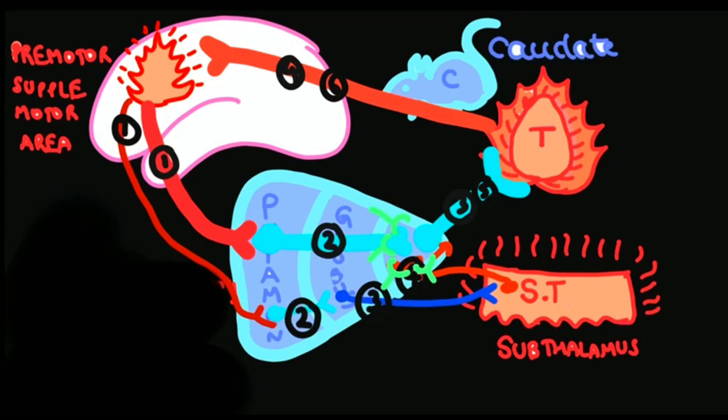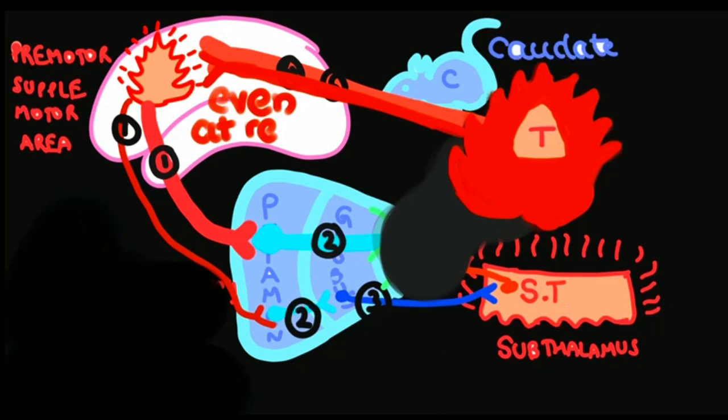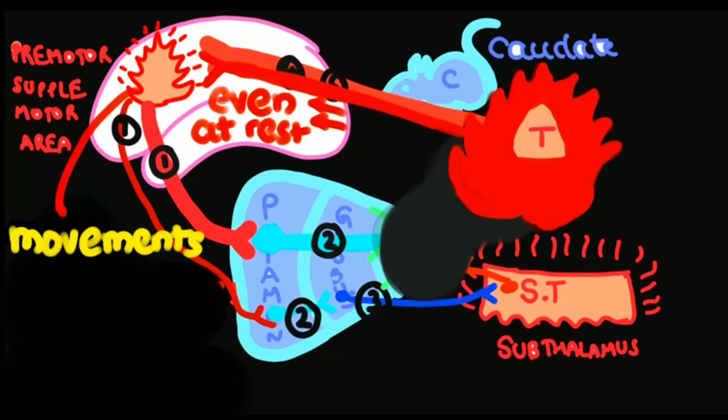is sprayed on the thalamus. So that means the thalamus fires maximally—even at rest it fires and stimulates the motor cortex. So movements will be continuously present even at rest. This is the classical Sydenham's chorea.